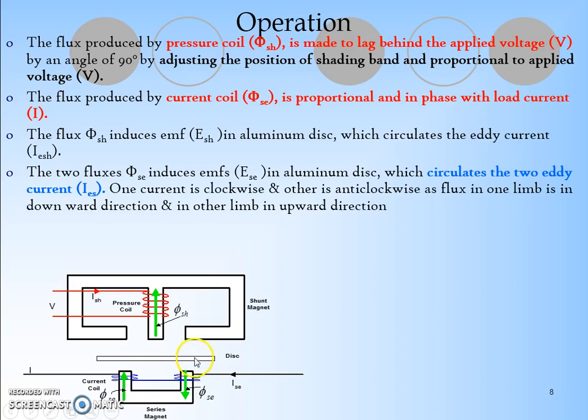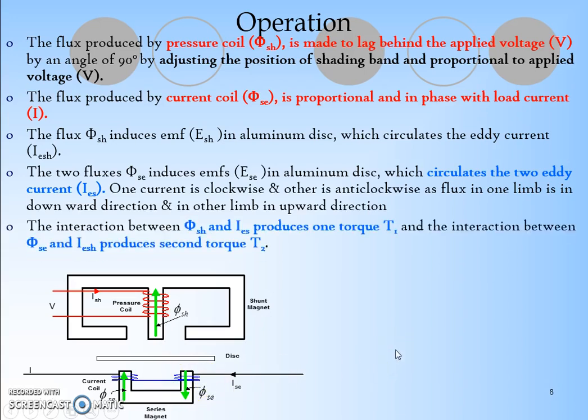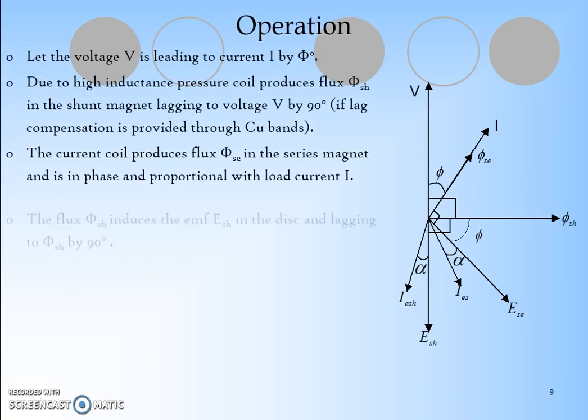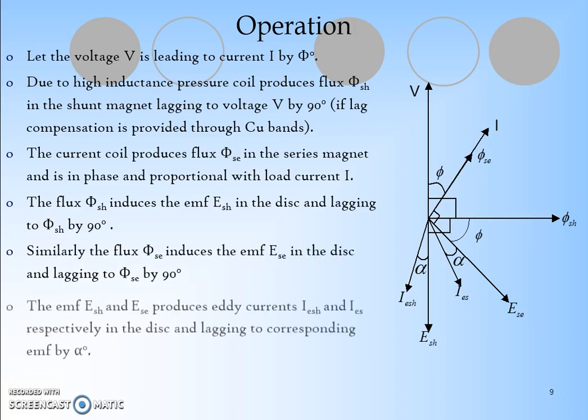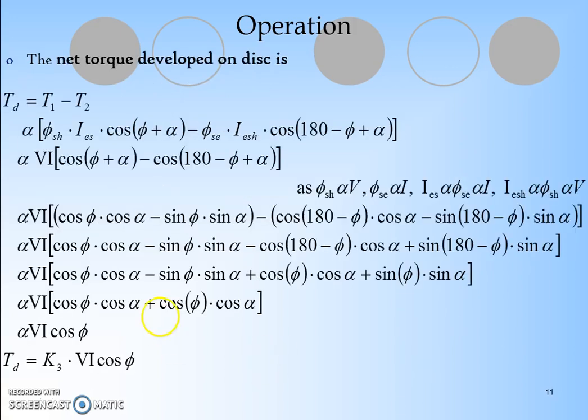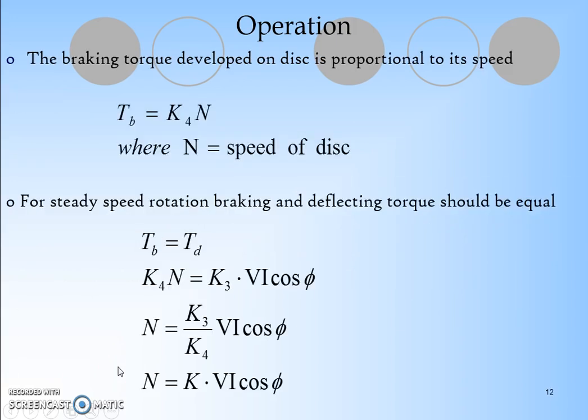The disc is short-circuited, so there will be two eddy currents because of the shunt and series flux. One flux direction in the series coil goes upward and the second flux goes downward. The interaction between Φ_sh and I_es produces torque T1, and the interaction between Φ_se and I_esh produces torque T2. This way, the resultant torque gives rotation to the disc. Finally, the net developed torque is K3·V·I·cos φ, which is the AC power formula.